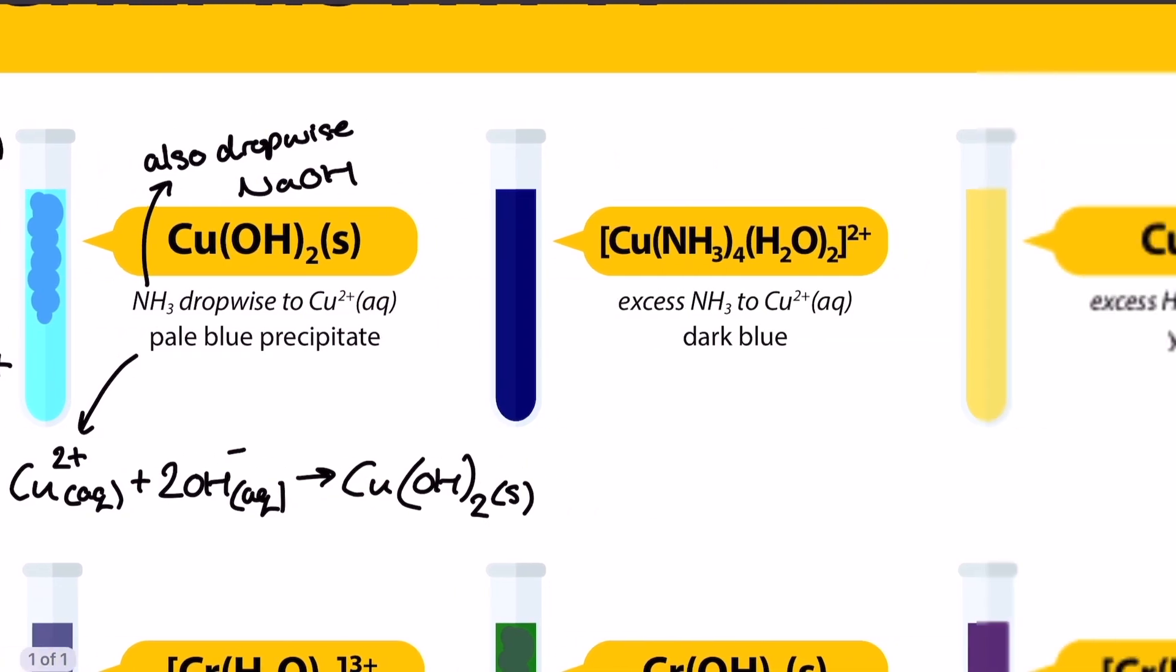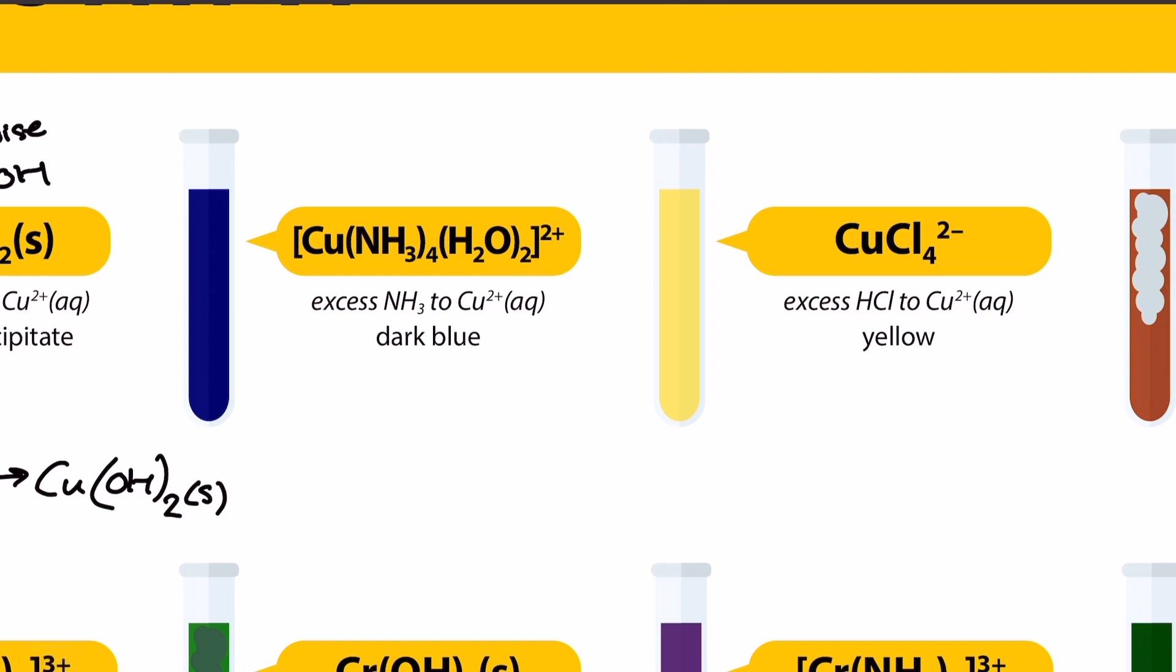Moving over to the right, as you can see here, we have another example of a complex ion. It's still copper-2+, but this time the six ligands that are surrounding that transition element ion are in a ratio of 4 to 2. I've got four ammonia ligands and two water ligands, and this causes cis-trans stereoisomerism in my complex ion.